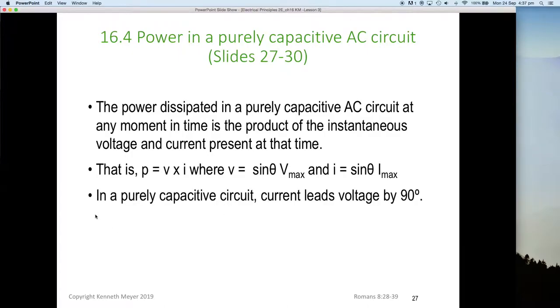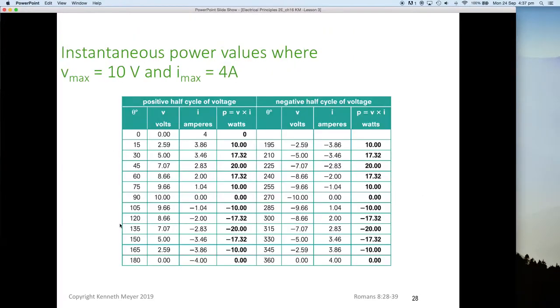In a purely capacitive circuit, current leads the voltage by 90 degrees, which we've already discovered. But this is going to explain to you a little bit more about why that's the case. So let's have a look at our table again. We're going to use this table to explain what is happening. Again we've got a maximum of 10 volts and a maximum of 4 amps. We've broken our table into two halves, positive half cycle, negative half cycle.